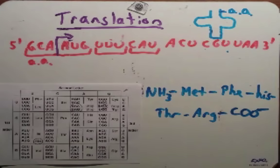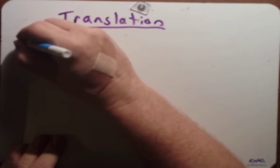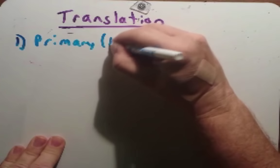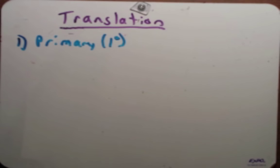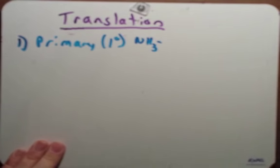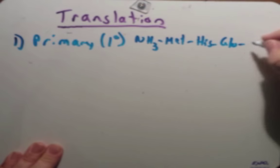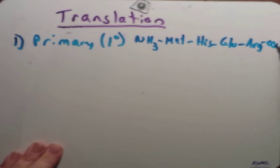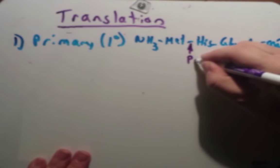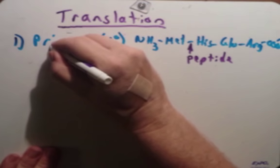If you had this on an exam and wrote just this sequence, you get full credit. On an exam it's very common for me to give you one of the DNA strands first and then have you come up with a protein sequence, so you have to work through all the different stages. Once this protein is made, it has to fold into different structures. The first structure is the primary structure — the linear sequence of the protein. You'll have your NH3, then a string of amino acids, then your carboxyl group. This is the primary sequence, held together by peptide bonds. The primary structure is non-functional.